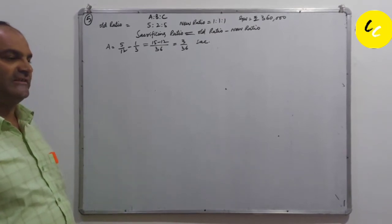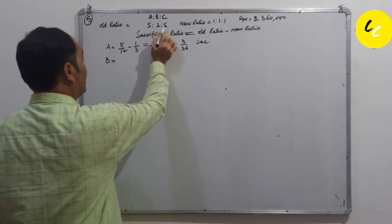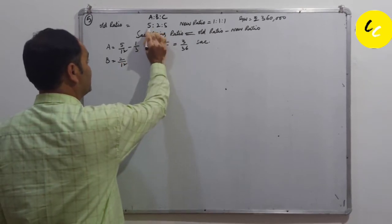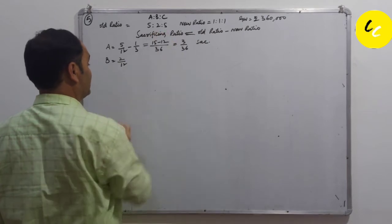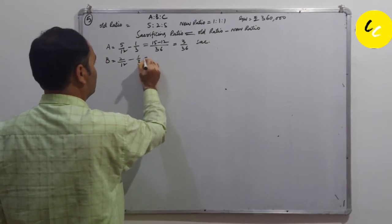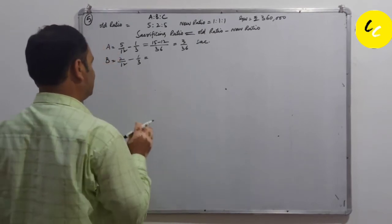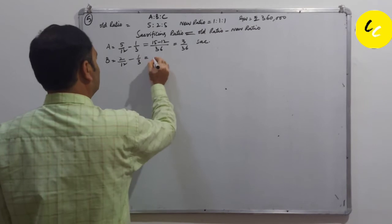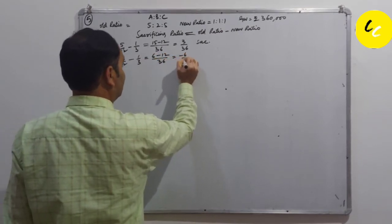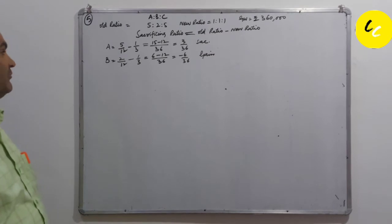What about B? Here B's old ratio is 2 by 12 minus 1 by 3. This is 6 minus 12 by 36, which is equal to minus 6 by 36. That is gain. Negative sign shows the partner is gaining.